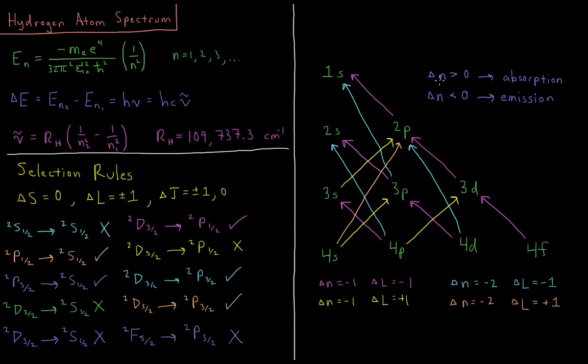If the change in n between the two states, n2 minus n1, if that's greater than zero, then we have absorbed a photon and increased our energy. If it's less than zero, then we have emitted a photon and decreased our energy.